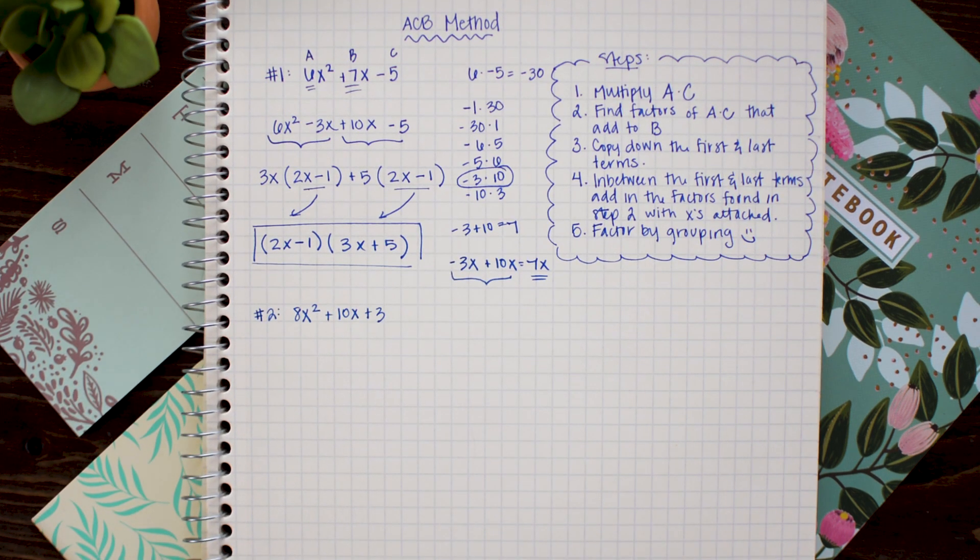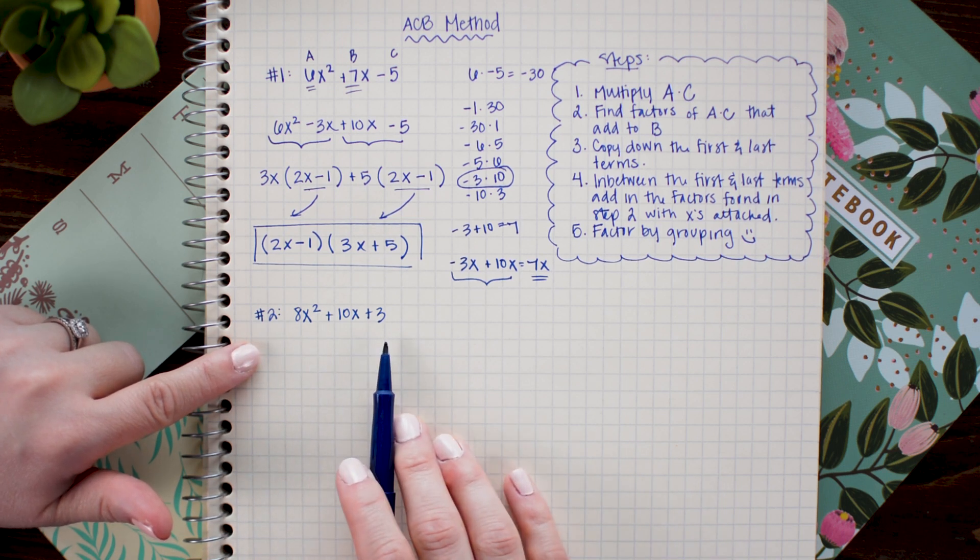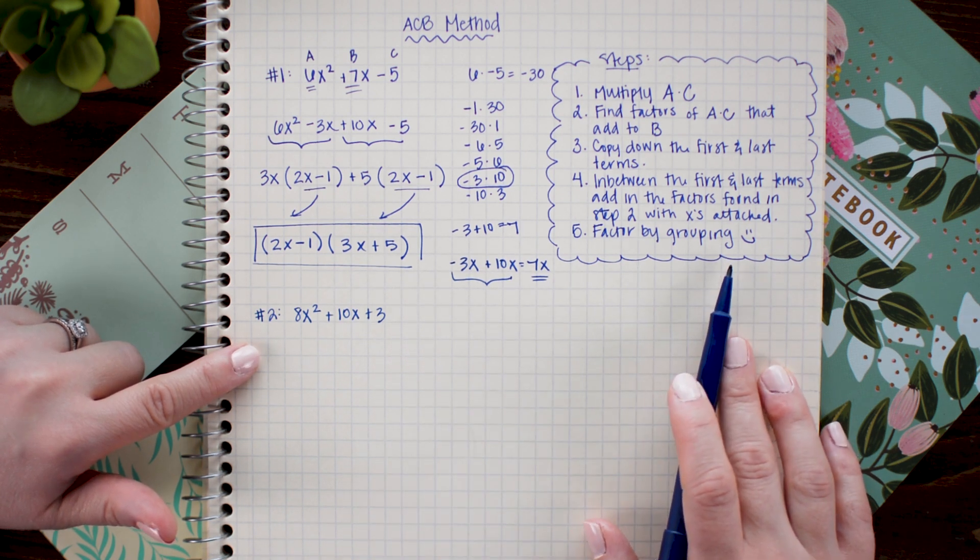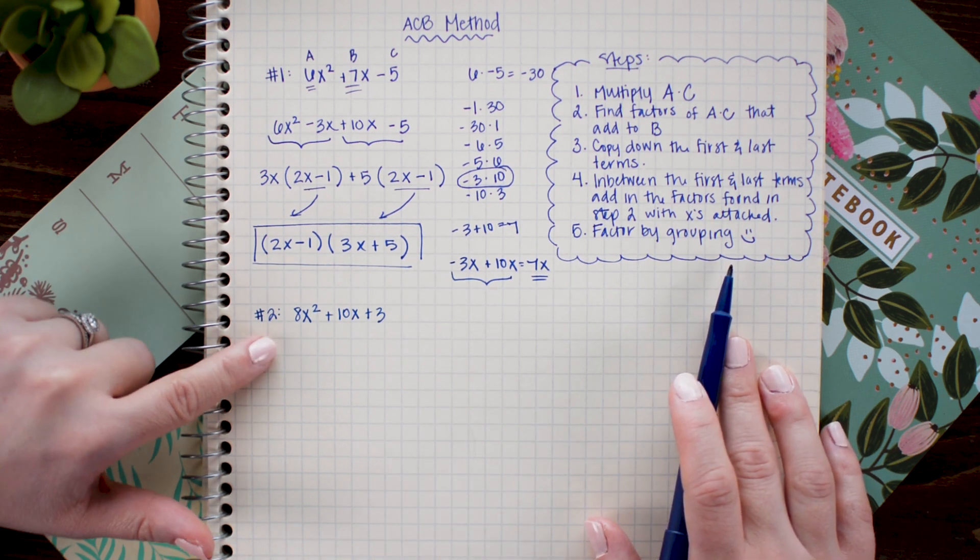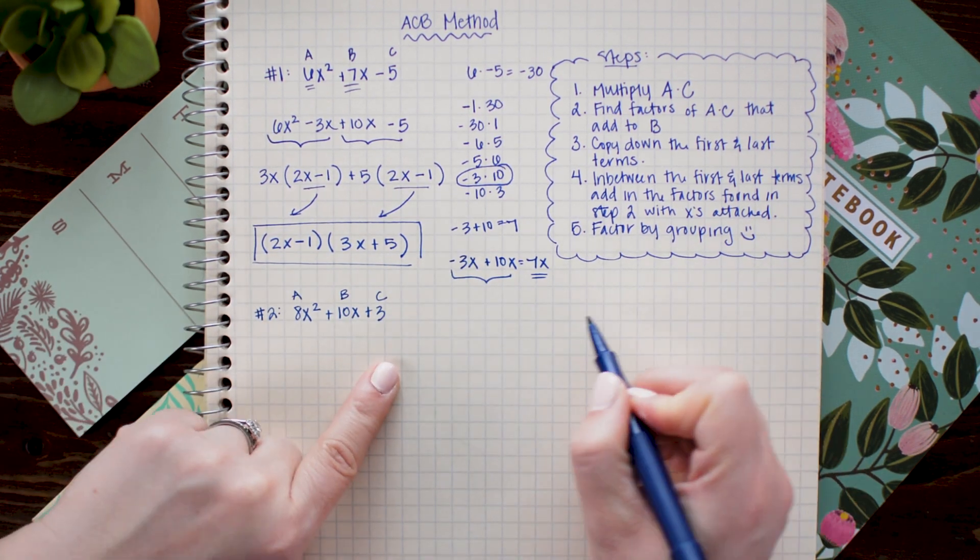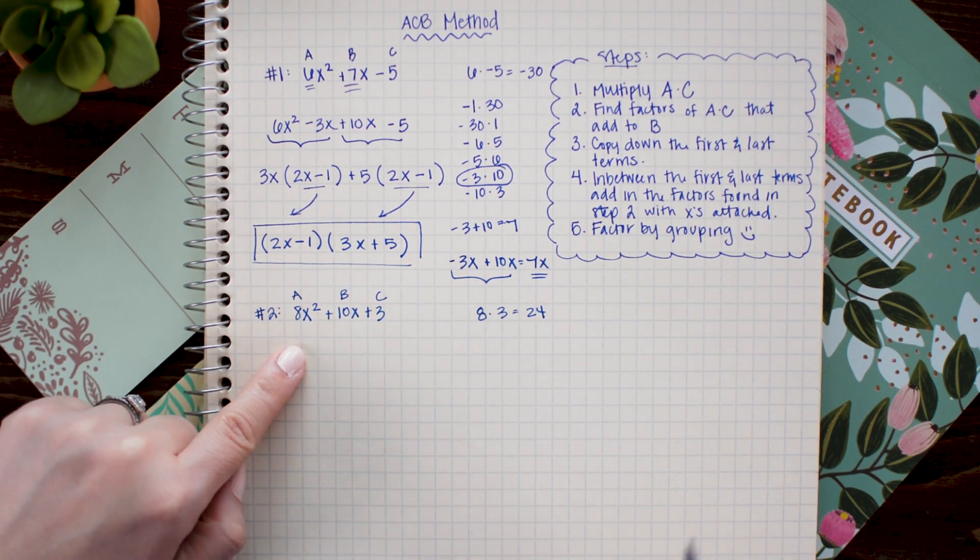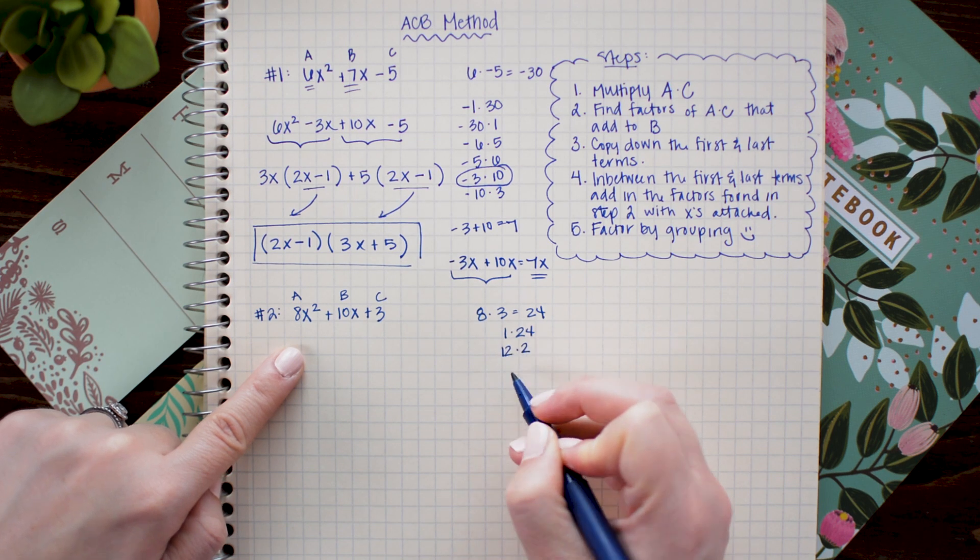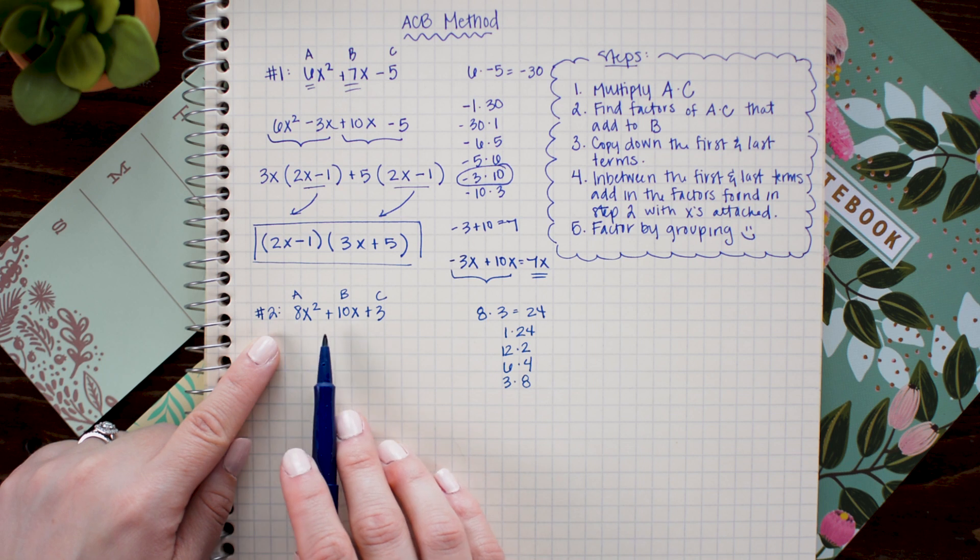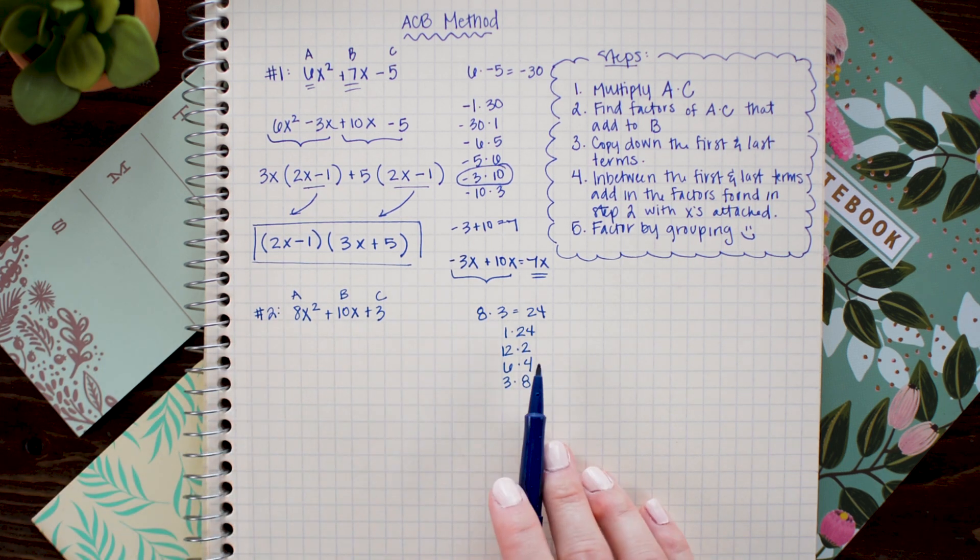All right so on this next problem we have the quadratic 8x squared plus 10x plus 3. And again we're going to use the ACB method, the steps outlined here, to factor it into two binomials. I'll start by multiplying the a coefficient and constant together. Now I'll list all the factors of 24.